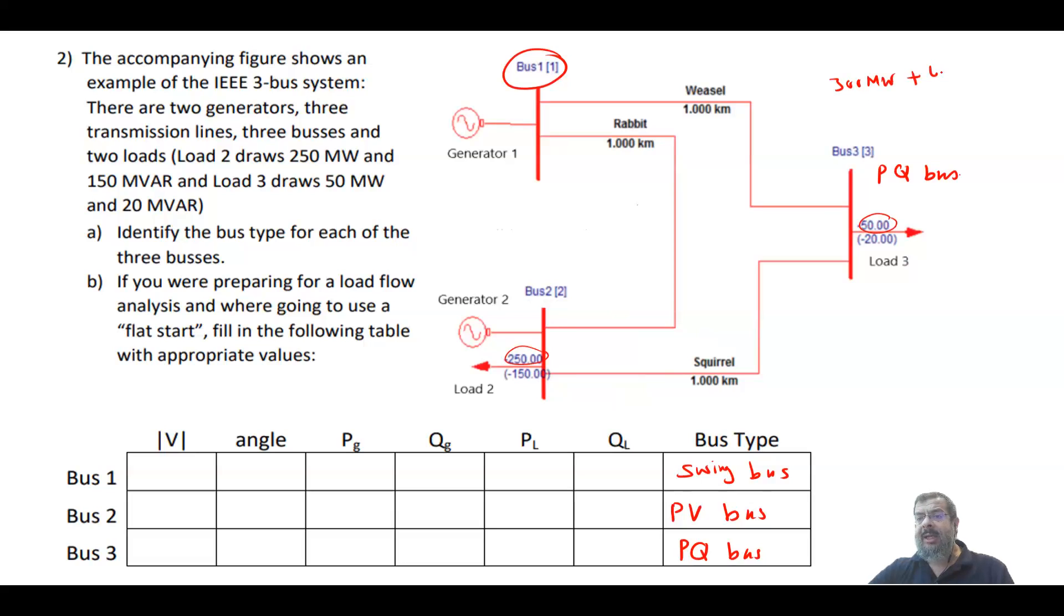Your generator has to supply this. Now you don't know the losses before you solve the system, so you cannot assign the exact number of power at the beginning. We keep a bus we call the swing bus or the slack bus, and whatever is left of the power can be assigned to that bus. These are the three different buses you have in the power system for load flow analysis.